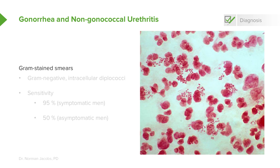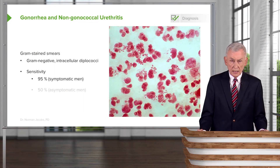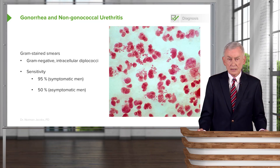As far as the gram-stained smears, we've already discussed that they are gram-negative intracellular diplococci. You can see that these are flat-sides-opposed gram-negative diplococci. The gram stain is very sensitive in symptomatic men — gram stain the discharge and you should be able to find these organisms. However, if the unusual scenario obtains that the man is asymptomatic, then the gram stain is only 50% sensitive.